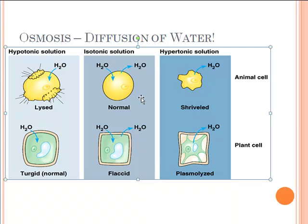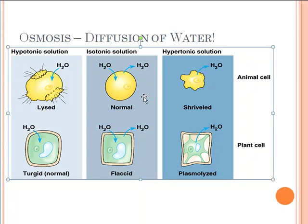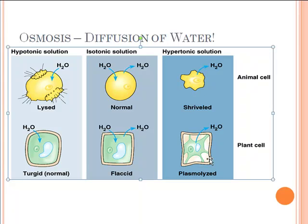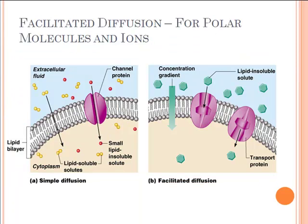Hypertonic solutions are very solute-concentrated or salty. If the cell is 80% water but the solution is only 50% water, the high water concentration is inside the cell, so water moves from high inside to low outside and the cell shrinks down or shrivels up. This is what would occur during dehydration. The same thing occurs in plants — just keep in mind the cell wall stays pretty rigid.